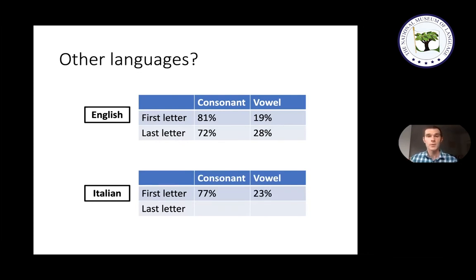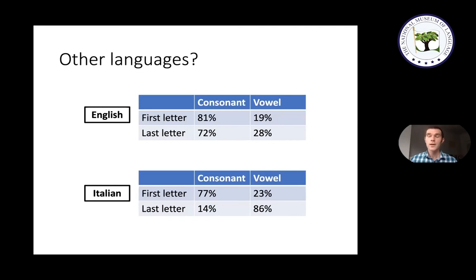This means that if you were constructing a crossword puzzle in Italian, you would probably have more trouble filling in those two corner positions — top right and lower left — than you would in English. But just because this property of Italian makes certain crossword positions harder to fill, it might make Italian better suited for some other types of wordplay. Specifically, I have rhyming in mind. To look at this, I'll consider Dante's Inferno, the epic poem originally written in Italian.